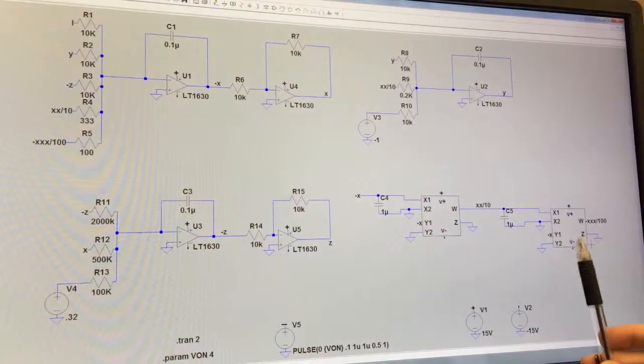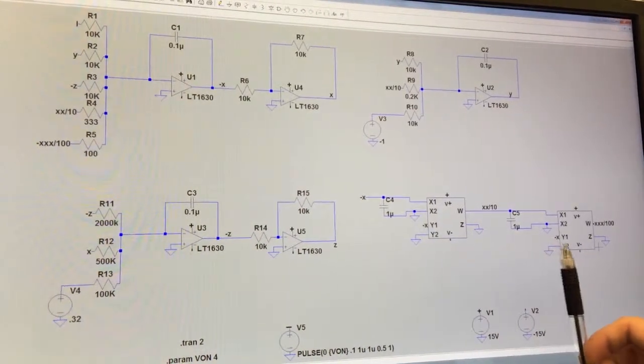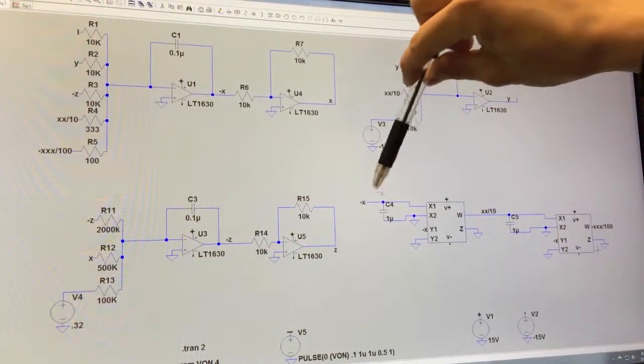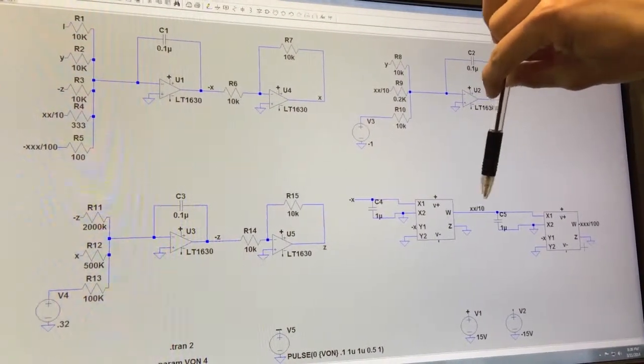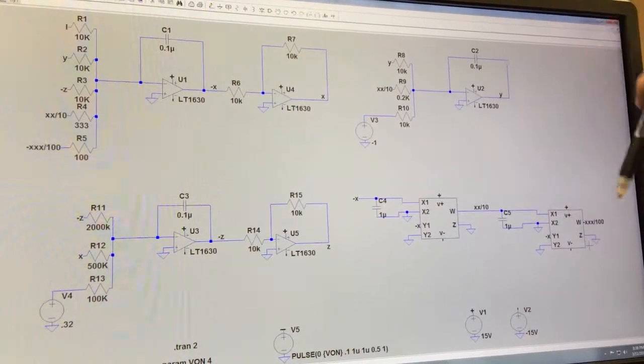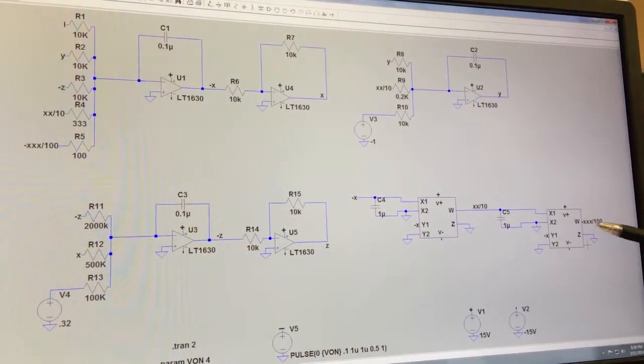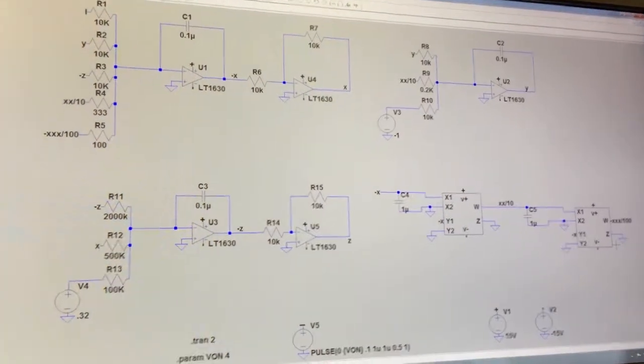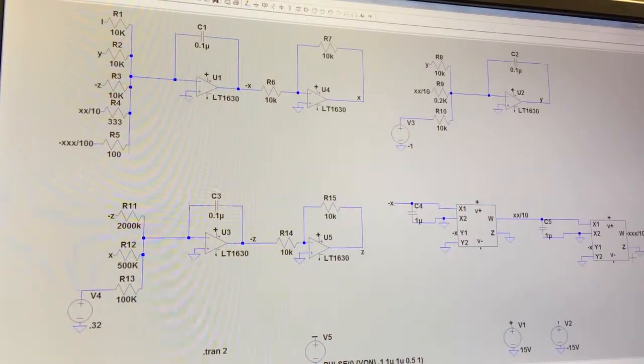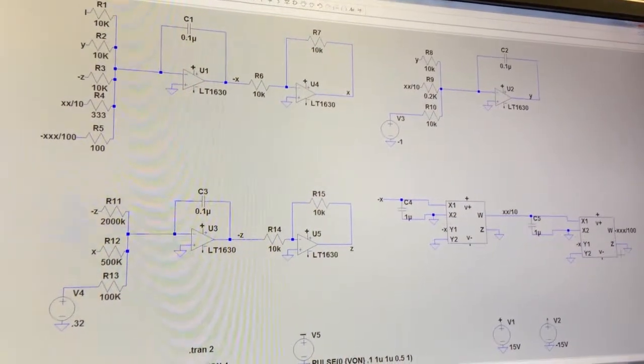These two are our multipliers, which multiply X by X squared and multiply X again to get X to the power of 3. The amplifiers that we use are the LT1630, and the multipliers are the AD633.